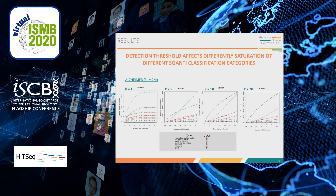Interestingly, the detection threshold also affects in a different manner the saturation of different SQANTI classification categories. At K equal to 1, all categories show percent saturation, but that changes as we increase the threshold. Additionally, as we increase the threshold, full splice matches become more predominant in novel-in-catalog transcripts and they show a tendency to saturation, while novel transcripts do not.